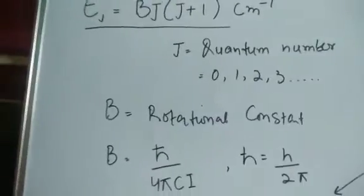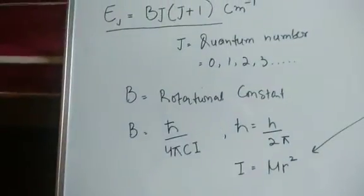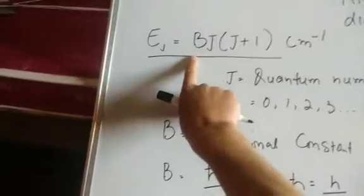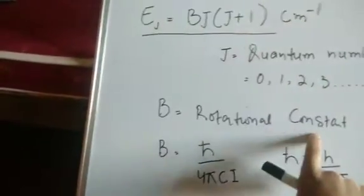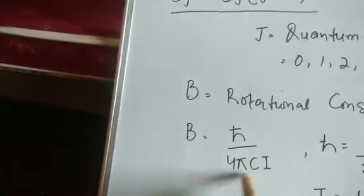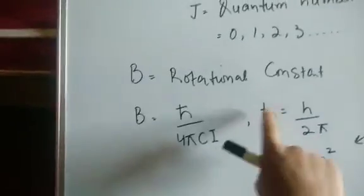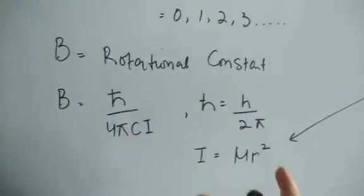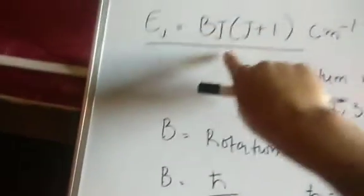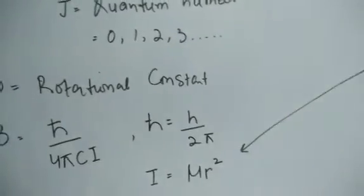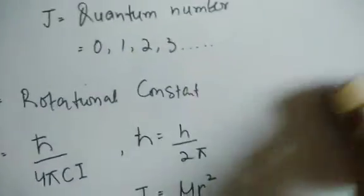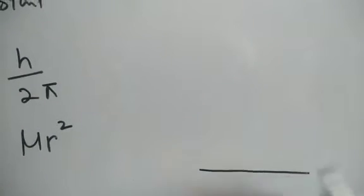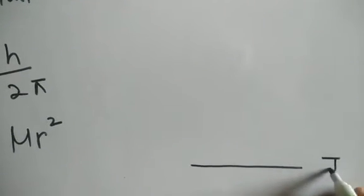I have not derived it because it is not necessary from the examination point. This is important - this is the energy, where B is the rotational constant. Now if we look at this equation and substitute values, for the ground state, the molecule has J equal to 0.